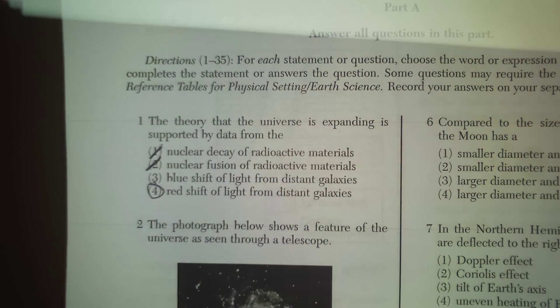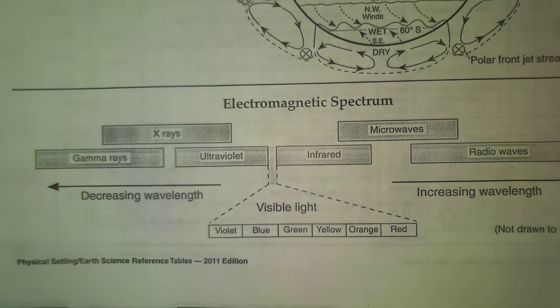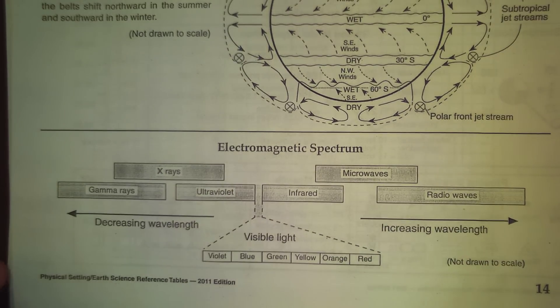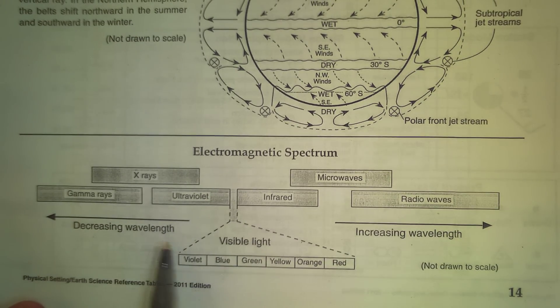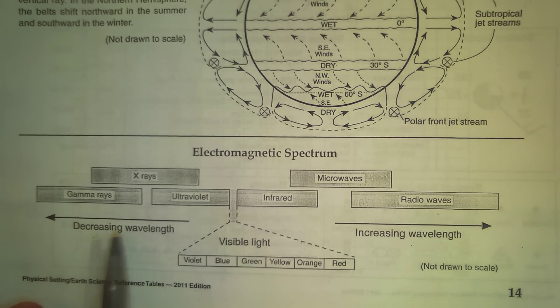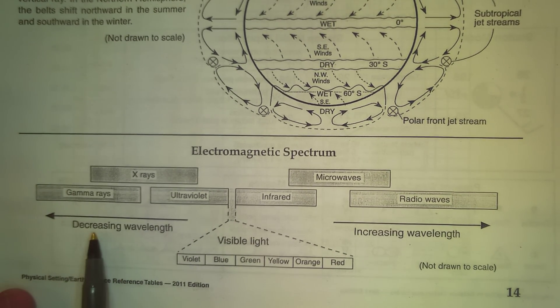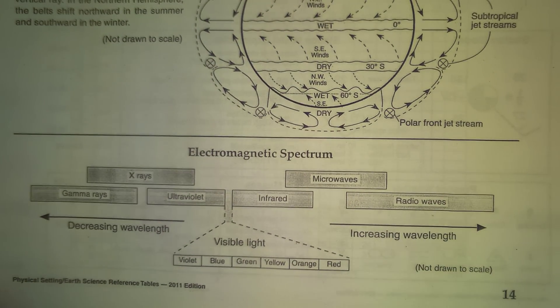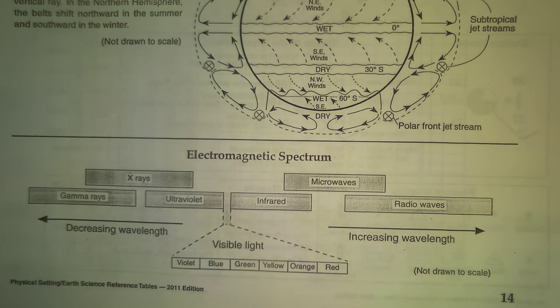And if you look at your reference tables, an easy way to remember this is to look at page 14. If you look at the blue, it's decreasing, so you can think of blue as getting closer, and red as increasing, so increasing distance. That's the easy way to remember it. Just if you look at page 14 of your reference table.